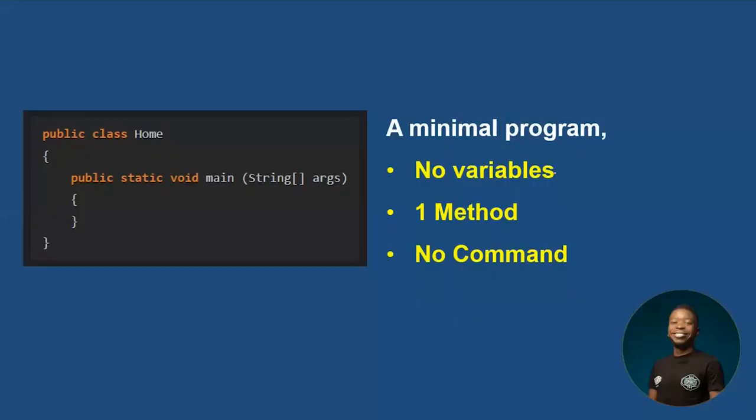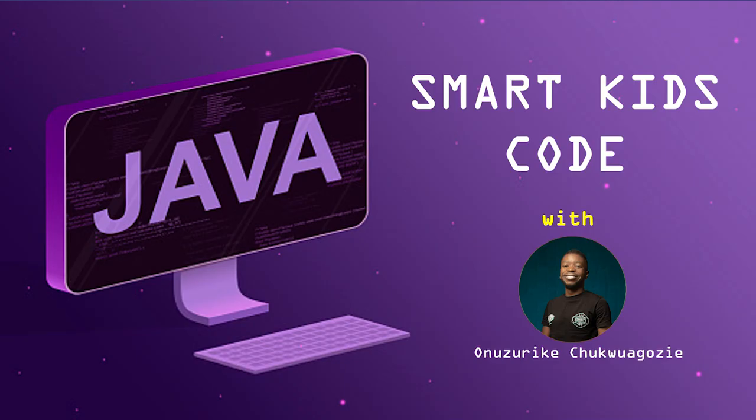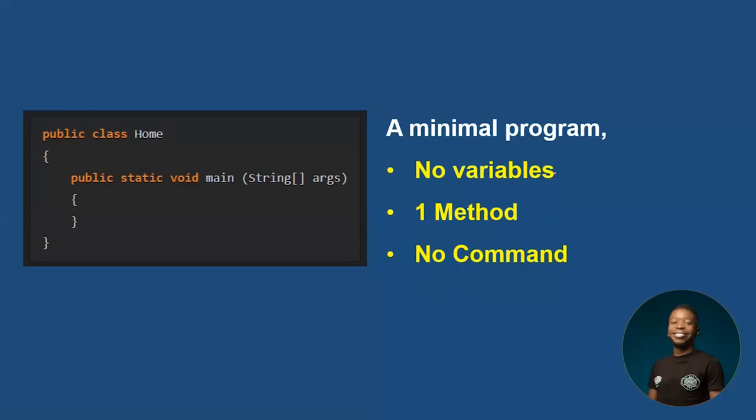Okay, so a minimal program in Java has no variables, has one method, no command. Can you see an example of a minimal program on our screen? Yes, I can see. Okay, so this is